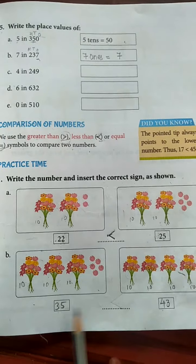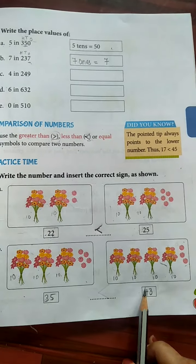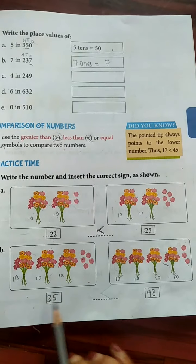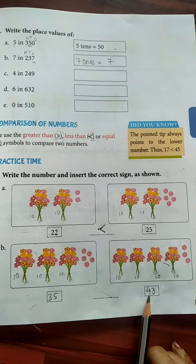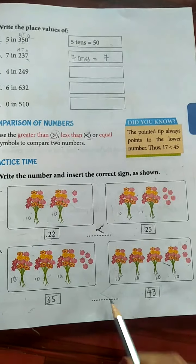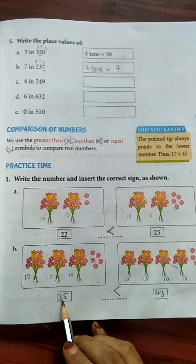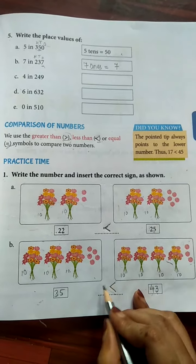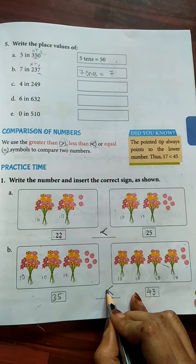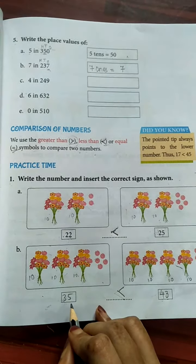So see these two numbers, 35 and 43. Which is greater number, 35 or 43? So 43 is big number or greater number. So 35 is less than 43.